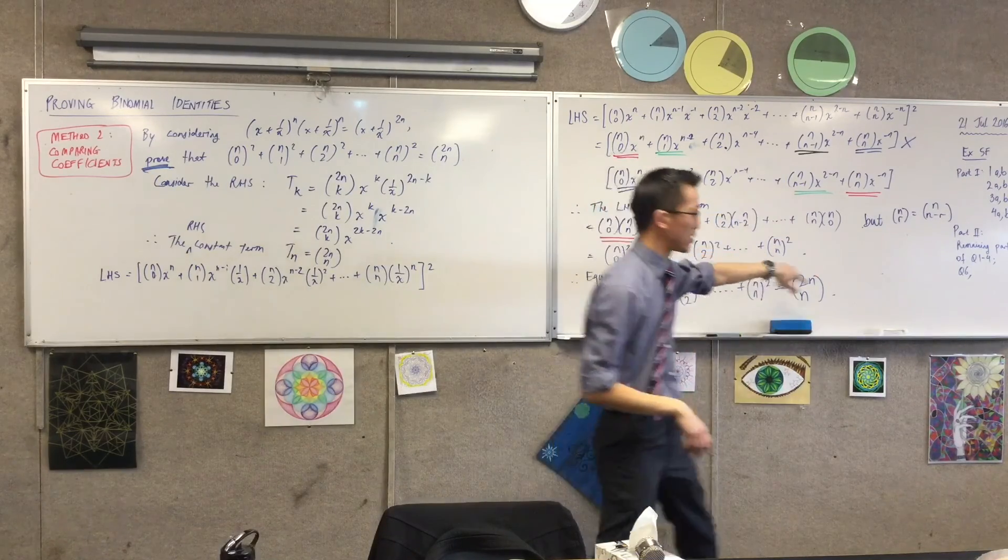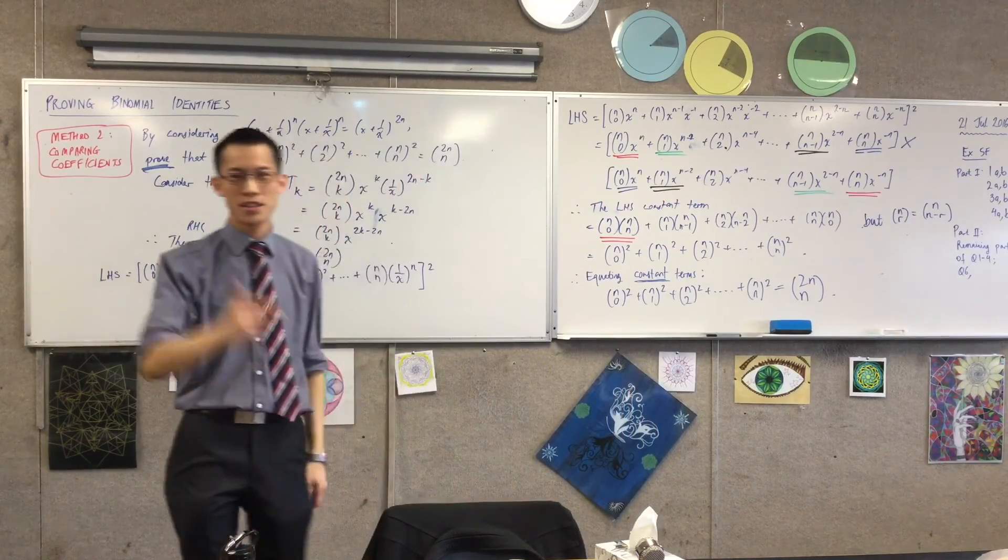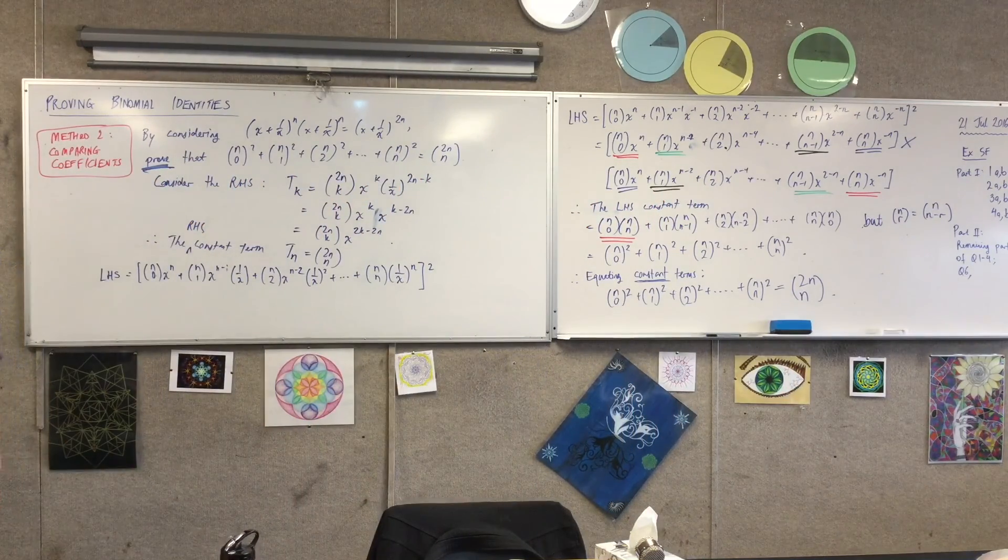That means you'll skip a whole bunch of parts. We'll come back to those when I show you. This is method one: substitution. Method two: comparing coefficients. There's a third and final method which I will show you later.